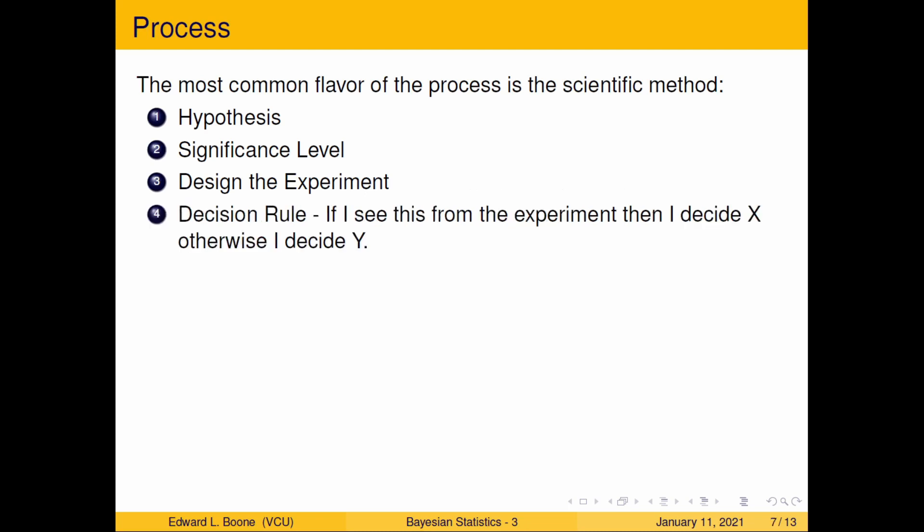Then you're going to have a decision rule that follows it. Now, notice, you're going to say, if I see this from the experiment, I will decide X. Otherwise, I will decide Y. So you're going to have two things that you're going to decide.